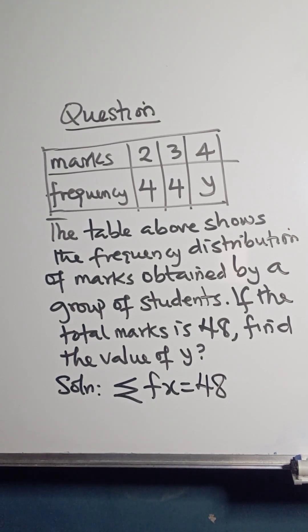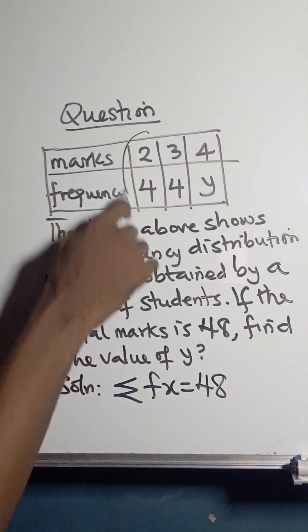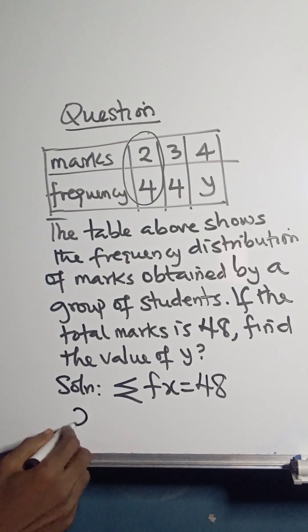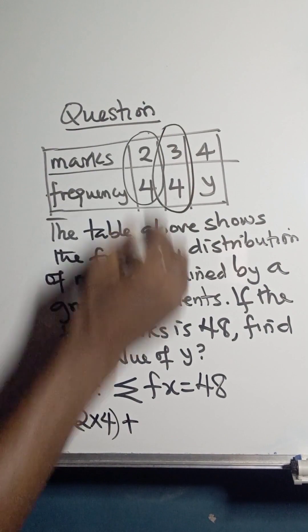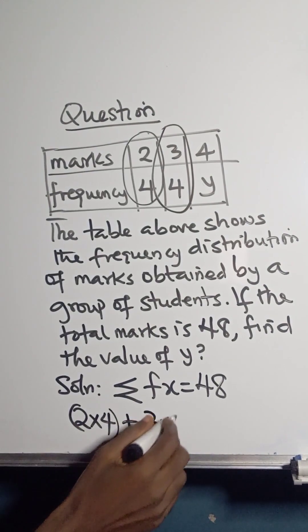How do we do summation f times x using the table? That means I'm going to multiply: 2 times 4, plus 3 times 4, and then 4 times y equals 48.